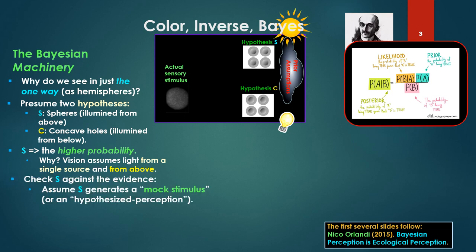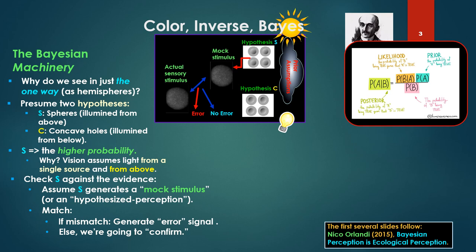So we're going to check hypothesis S against the evidence. We'll assume S generates a kind of mock stimulus, a perception, a hypothesized perception. And then we're going to match the actual information to the mock stimulus. And if a mismatch, we'll generate an error signal. However, if there's no error, ultimately we're going to accept that hypothesis, we're going to confirm it.